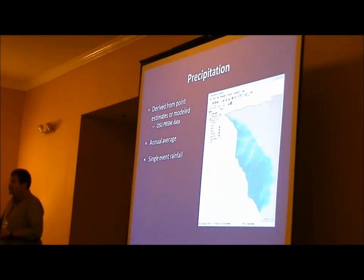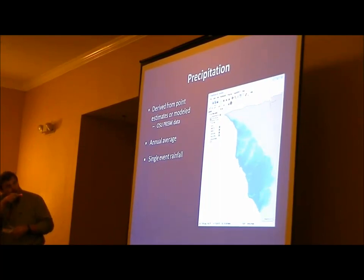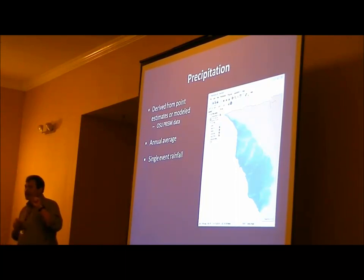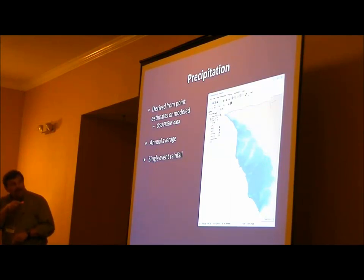Precipitation is one of our big inputs. This can be as hard or as easy to do as you want to make it. We were out in part of Hawaii where the annual average is 153 inches of rain, but only about seven rainy days. So when it rains up there in the mountains, it rains big time — but down at the coast, it's only about 10 inches.